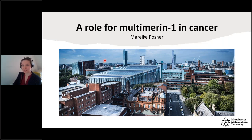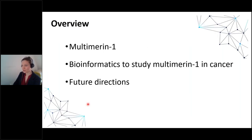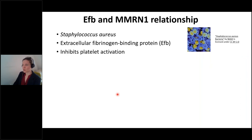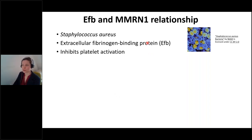Thank you very much for the introduction and the opportunity to share some of the work we have been doing on multimerin-1 in cancer. In my talk, I will introduce you to the protein multimerin-1 and why we are studying it, how we did the bioinformatics to explain its role in cancer, and I will conclude with future directions. How we originally got interested in multimerin-1 came through our research in Staphylococcus aureus pathogenicity. Aureus is a formidable pathogen that uses an arsenal of proteins to aid its infection, evading the immune system response.